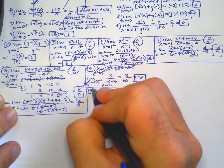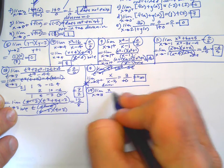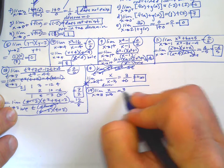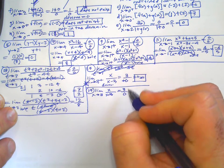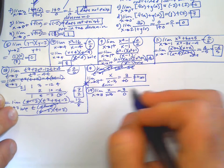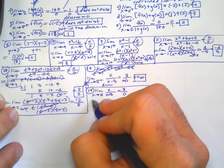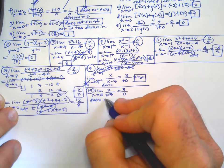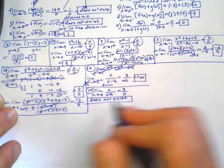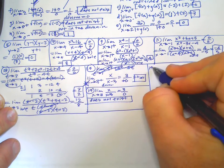Number 17: we get 3 over 0, but because it's two-sided, one side is going to go one way and the other side is going to go the other way — they're both going to infinity but in opposite directions. So two-sided, we're going to just say does not exist. Writing infinity just doesn't make as much sense because the sides don't agree.